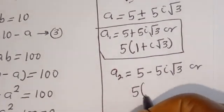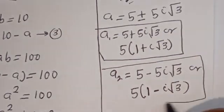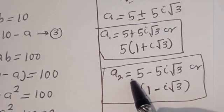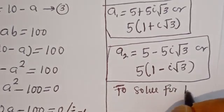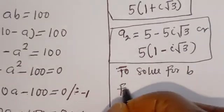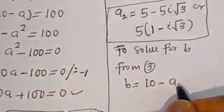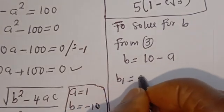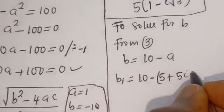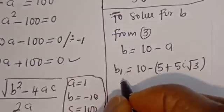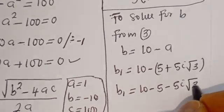Now we can solve for b1 and b2. From equation 3, b equals 10 minus a. So b1 equals 10 minus a1, which is 10 minus (5 plus 5i root 3), giving b1 equals 5 minus 5i root 3, or factoring out 5: 5 bracket (1 minus i root 3).